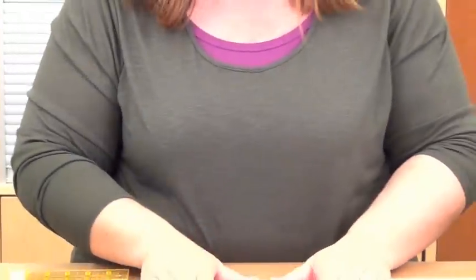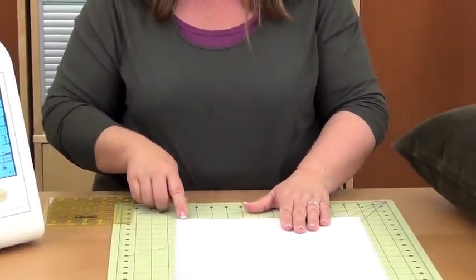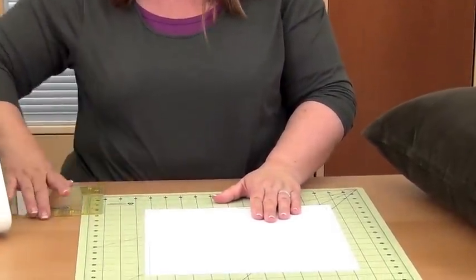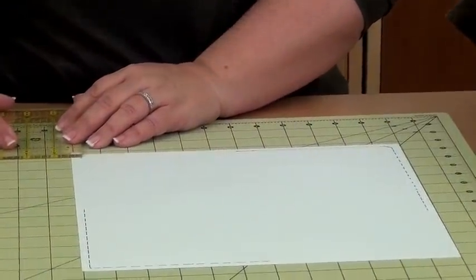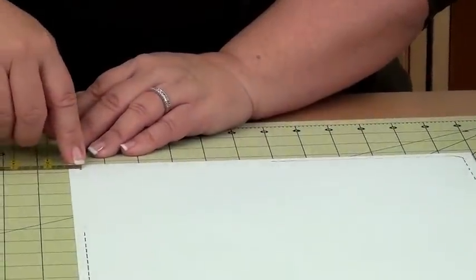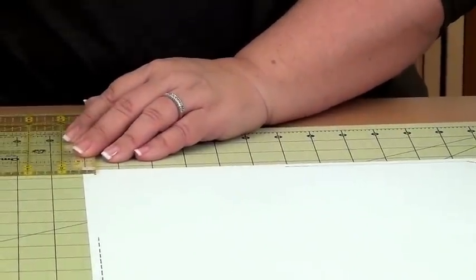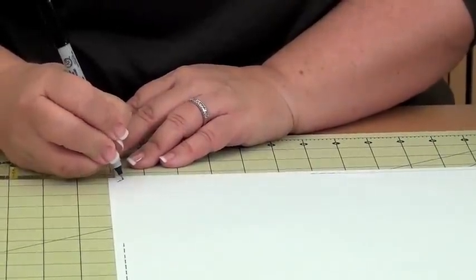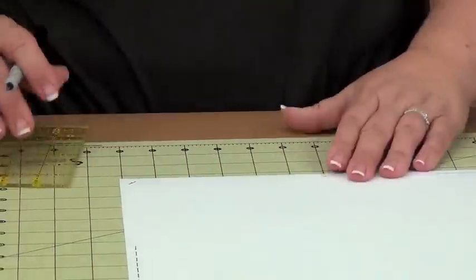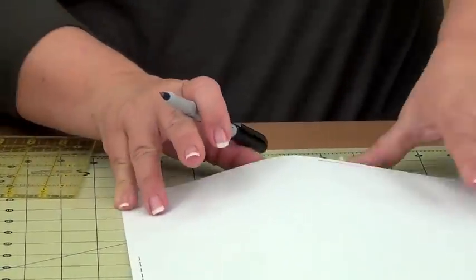If this was my pillow top that I was going to be stitching on, I've drawn my dot here using my acrylic ruler, and I would use a fabric marking pen. So I've placed that dot exactly where I want my pivot point to be. Then I'll just put two diagonal stitches on either side of that dot.